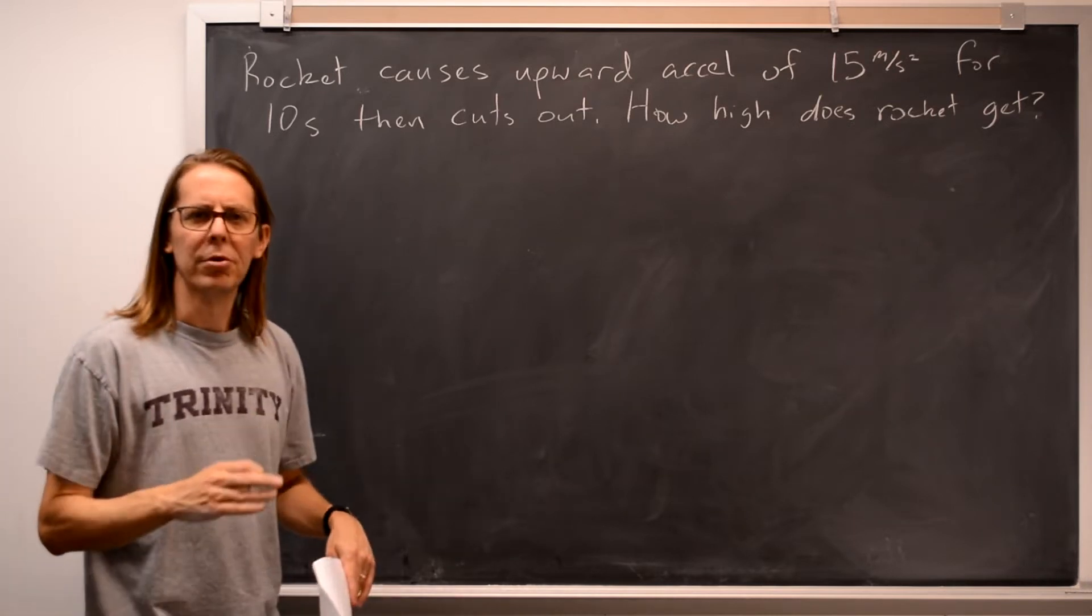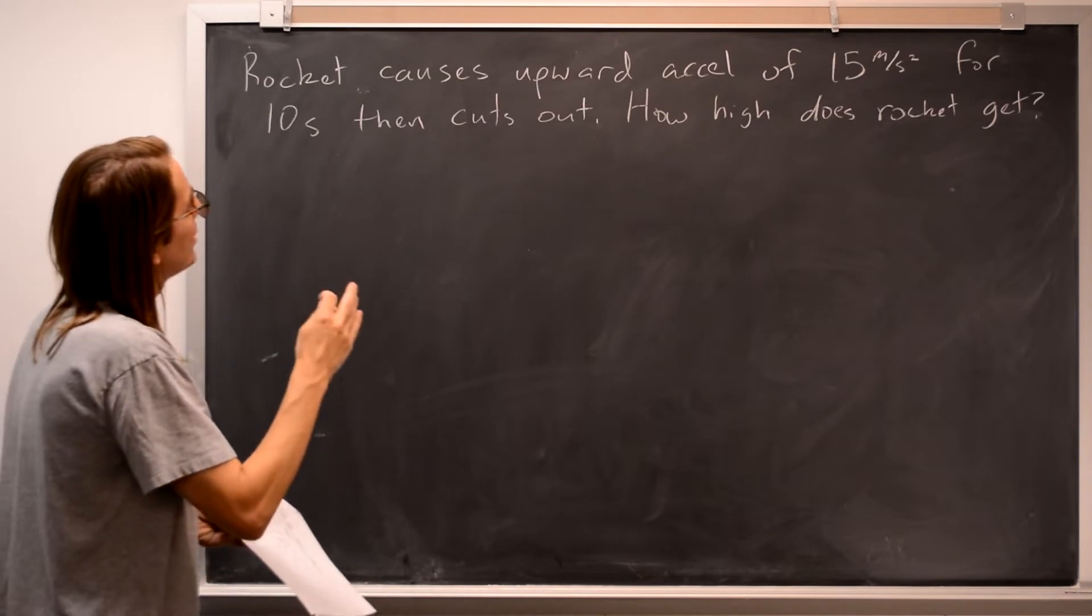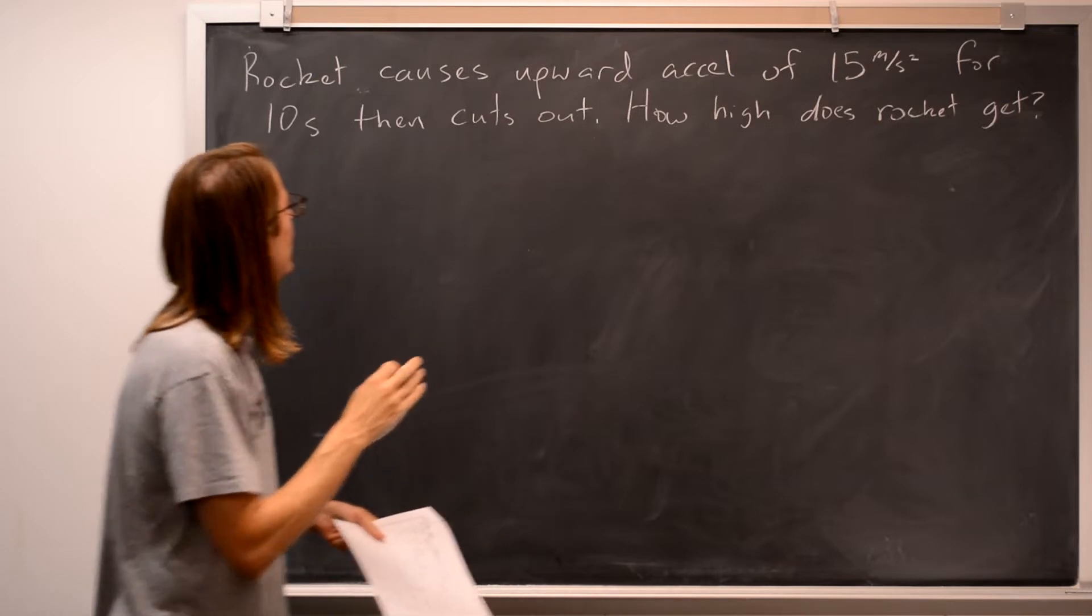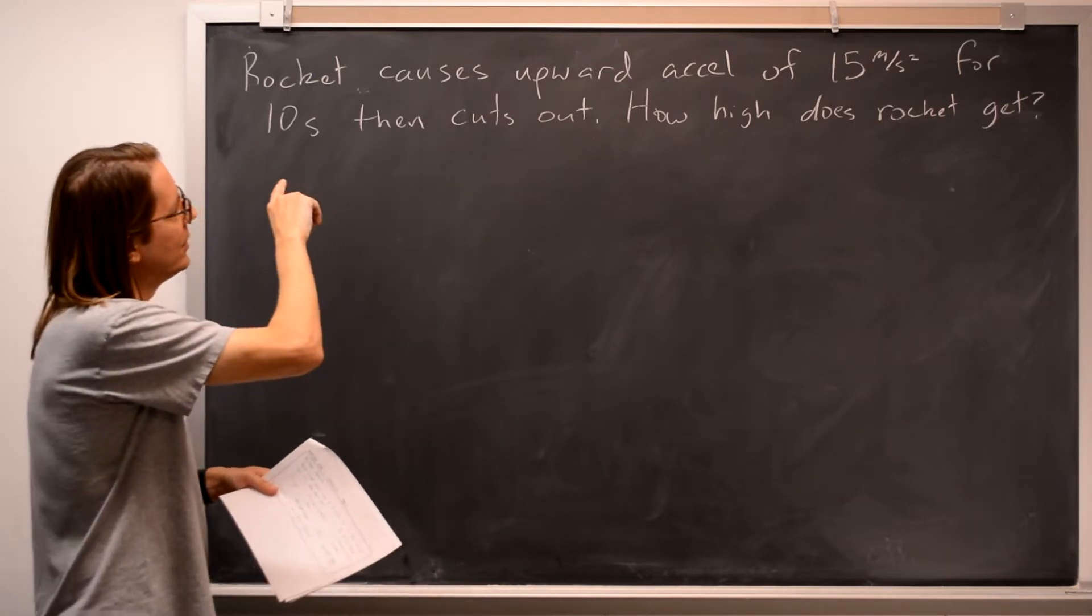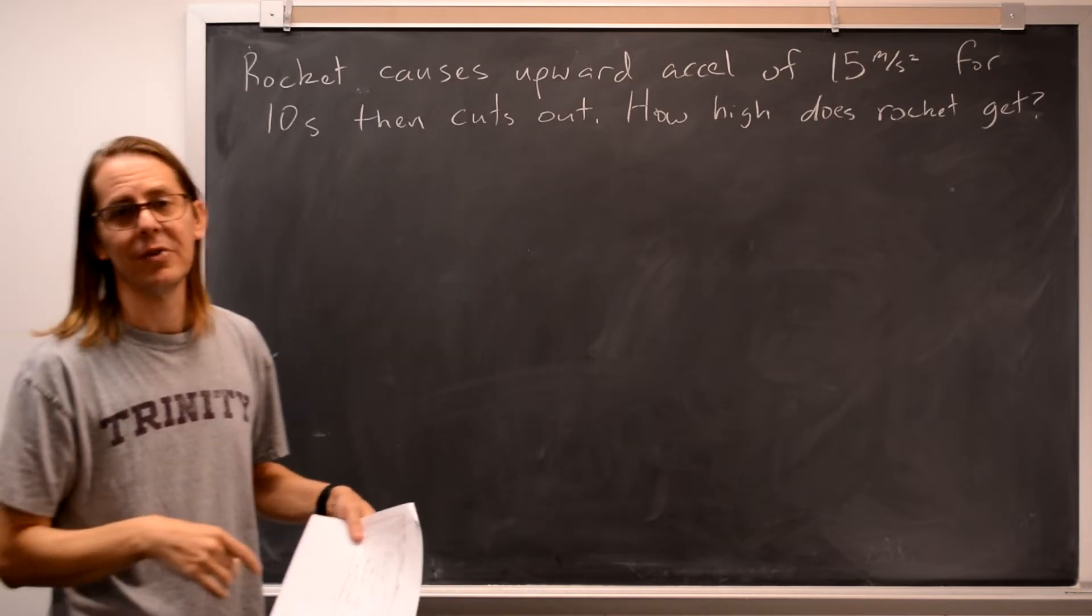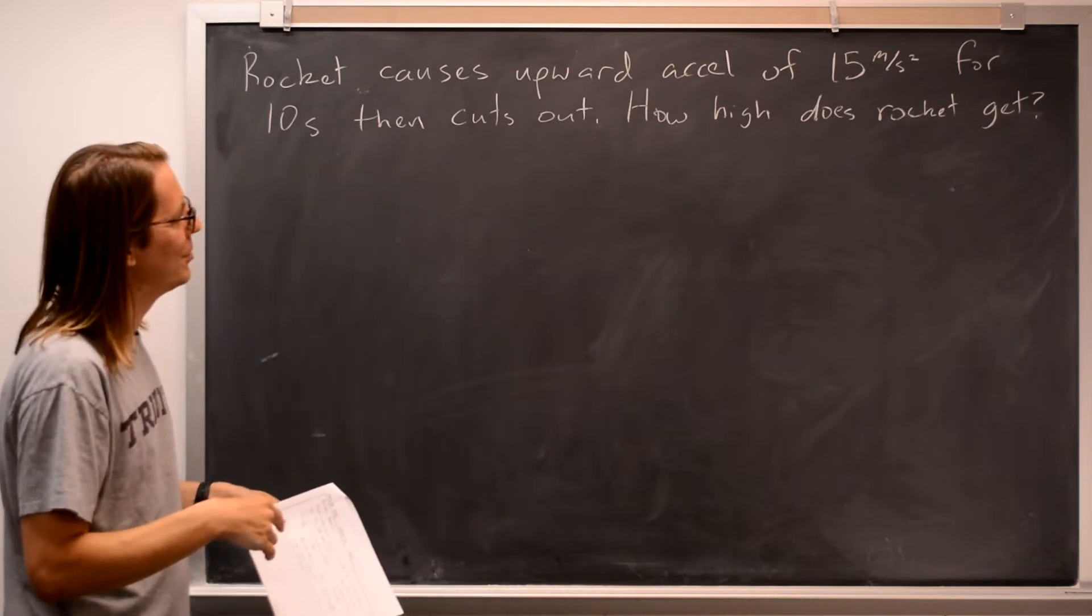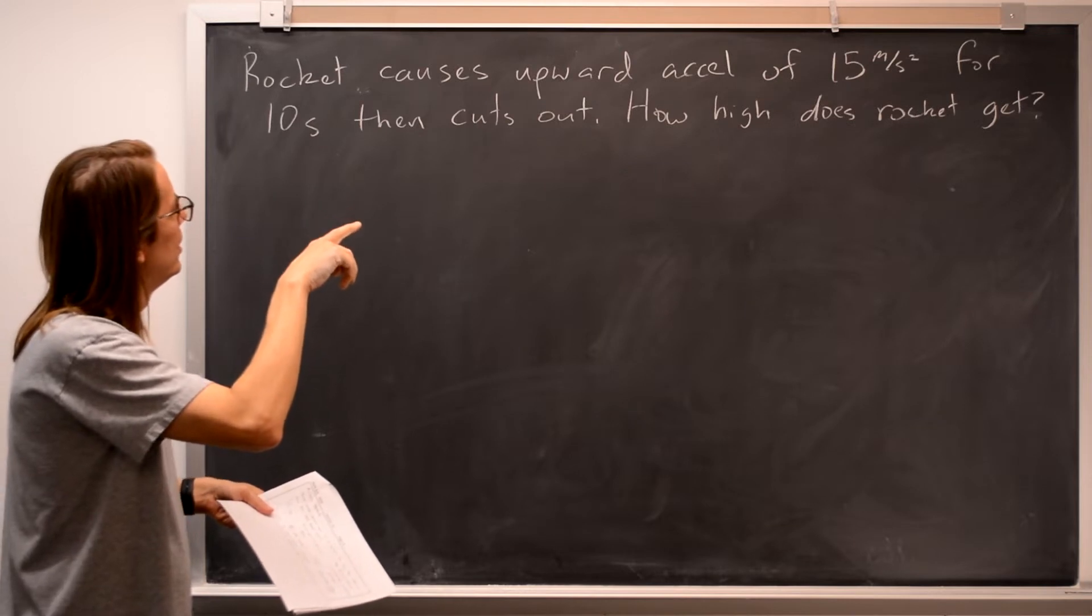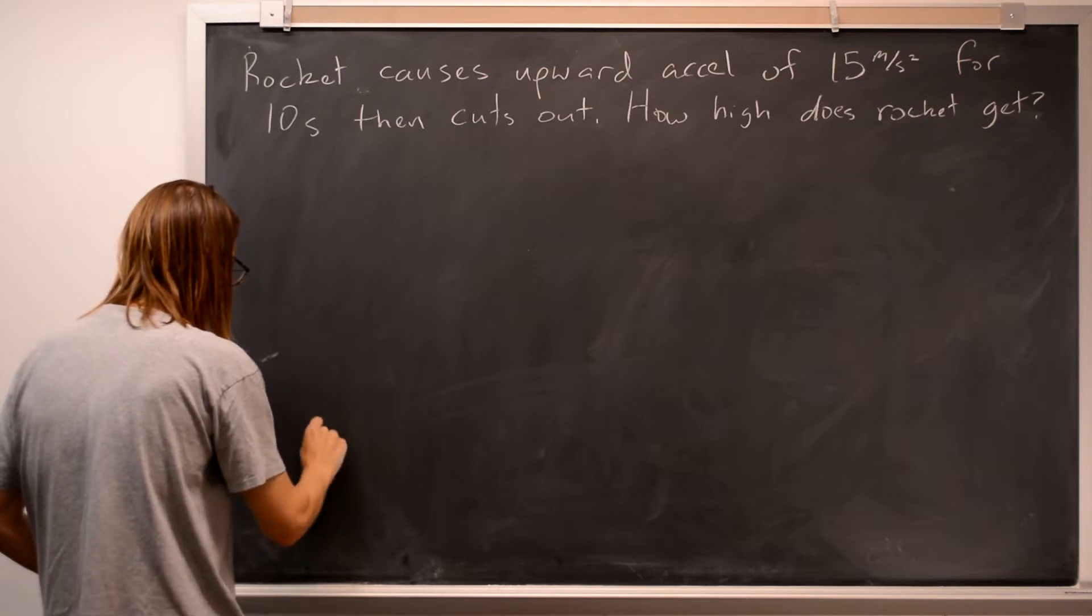So let's first read it, think it through, and figure out where the two segments are, and then we'll know what to do with them. So a rocket causes upwards acceleration of 15 meters per second squared for 10 seconds. Then it cuts out. How high does a rocket get? Okay, so this wasn't really well written. This is a case of kind of a vague problem, so we will do better on assignments or on exams. But the rocket causes upwards acceleration of 15 meters per second squared for 10 seconds means it's a launch. I should have said it was launched. So it started from rest. That's the key.